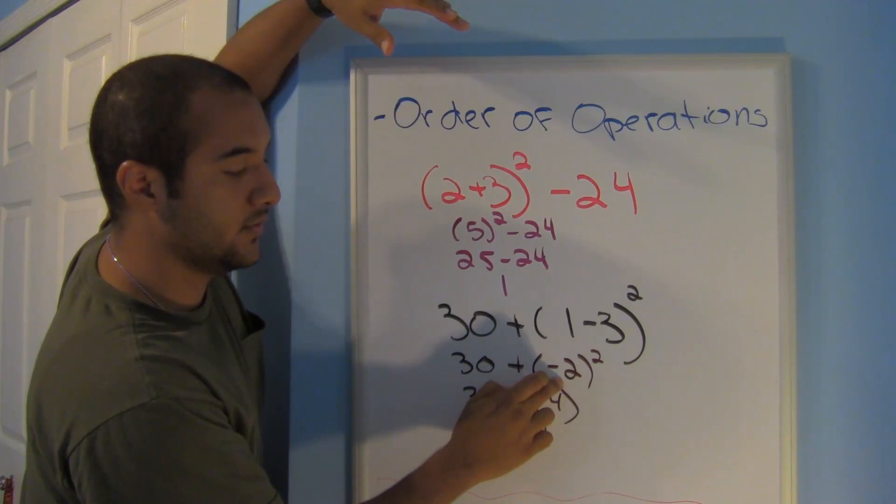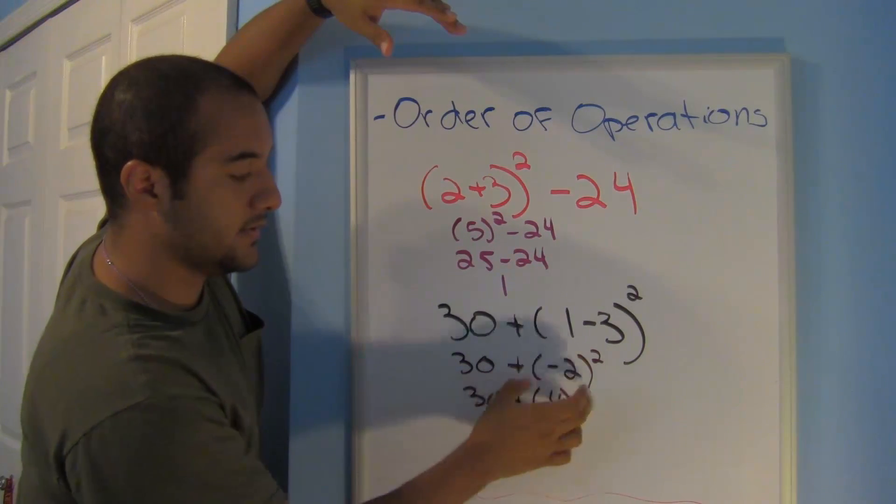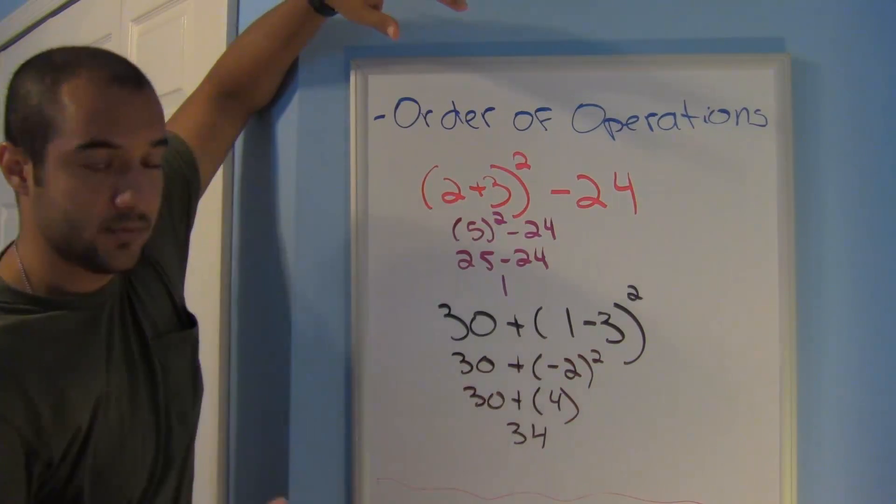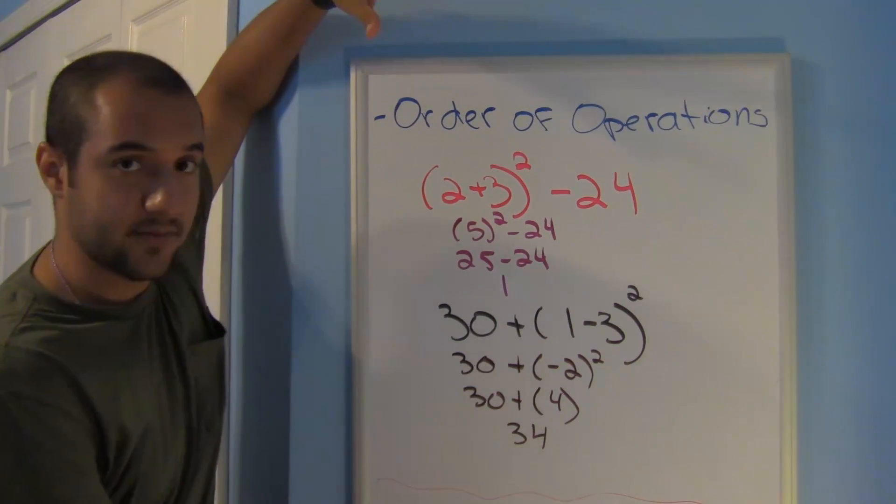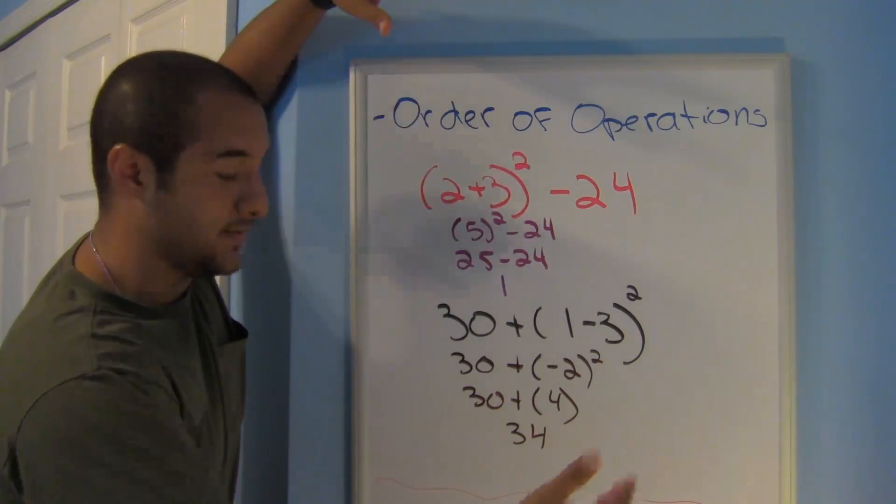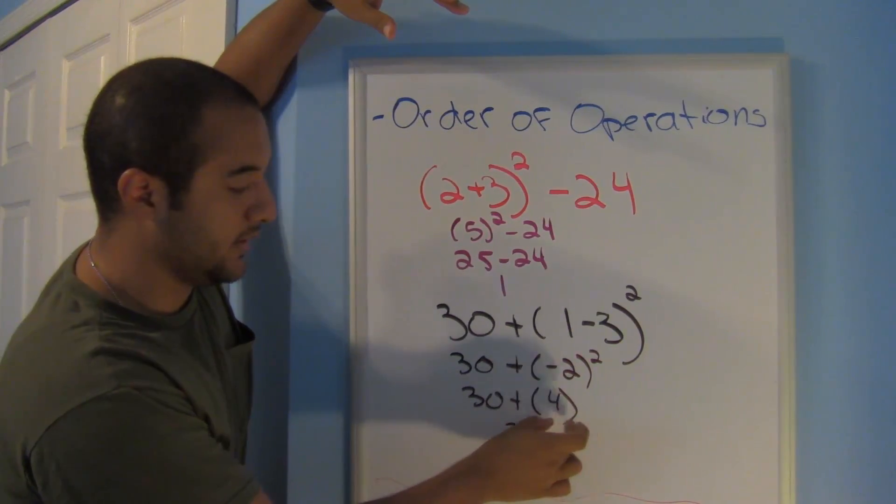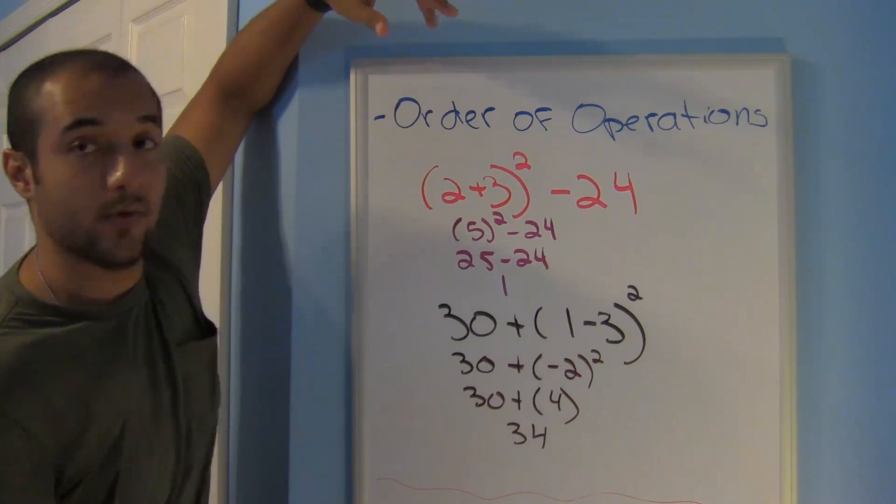So one minus three is negative two. I have 30 plus negative two squared. Got to square that first. So negative two times negative two is positive four. Remember, negative times a negative is a positive. And then here we have 30 plus four is just 34.